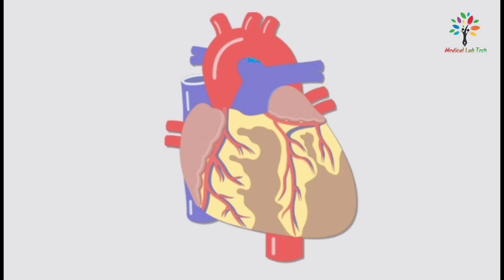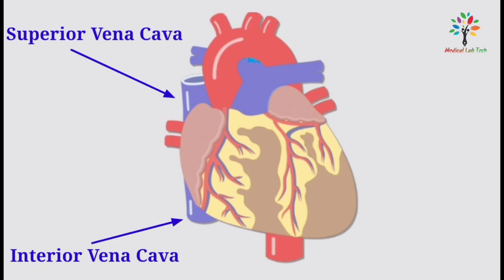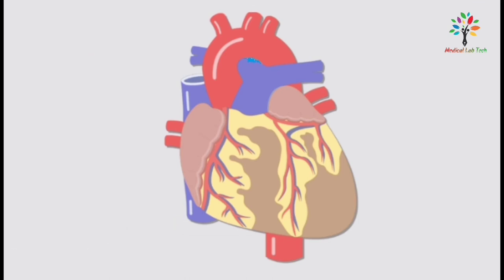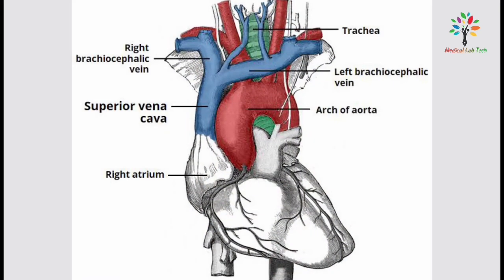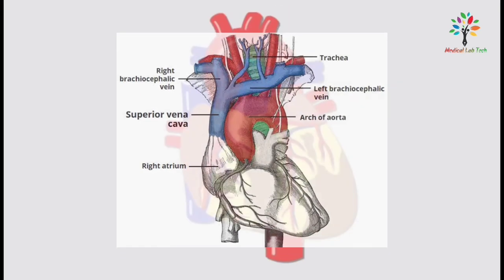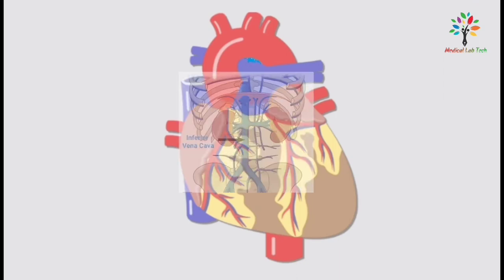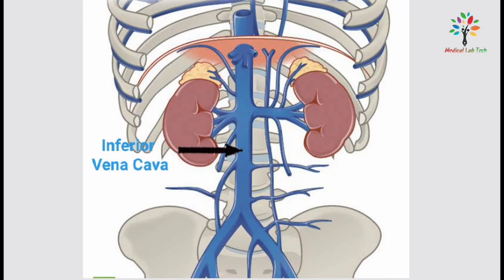Next, I am going to talk about the vena cava. The superior and inferior vena cava are the largest veins in the body and empty blood directly into the right atrium of the heart. They mainly carry deoxygenated blood to the heart. The superior vena cava drains all body structures lying above the diaphragm, and the inferior vena cava drains blood from all structures below the diaphragm.